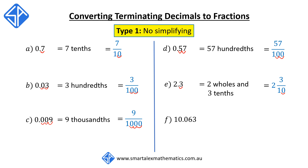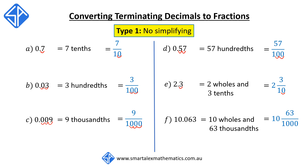The last example for this type is 10.063. Here we've got 10 wholes and 63 thousandths, so as a fraction we write it as 10 and 63 over 1000. Again, we've got three digits after the decimal point, corresponding to three zeros after the one.